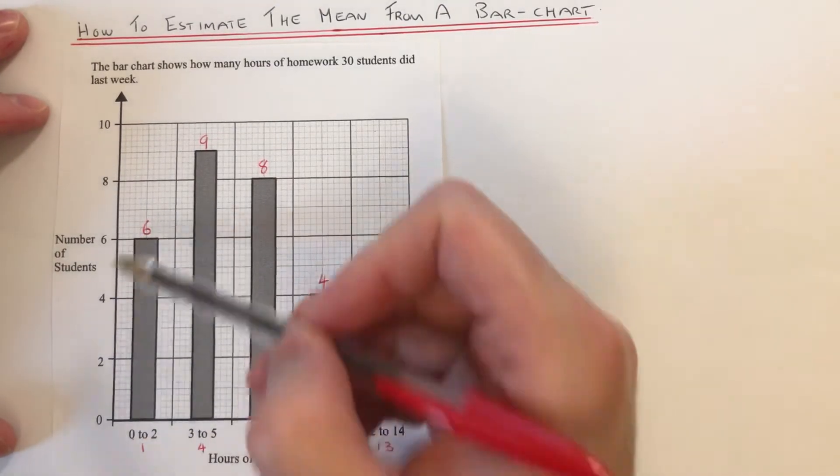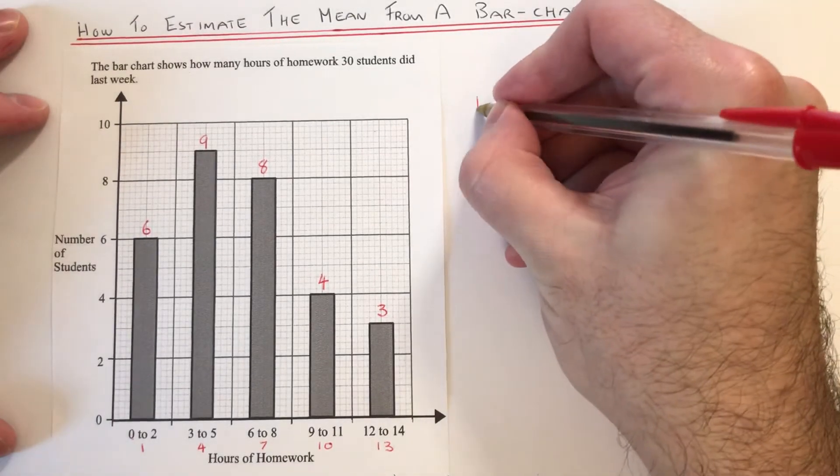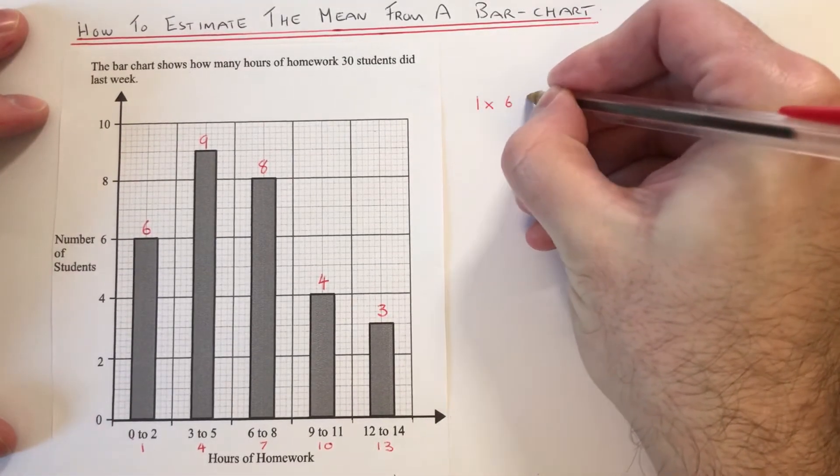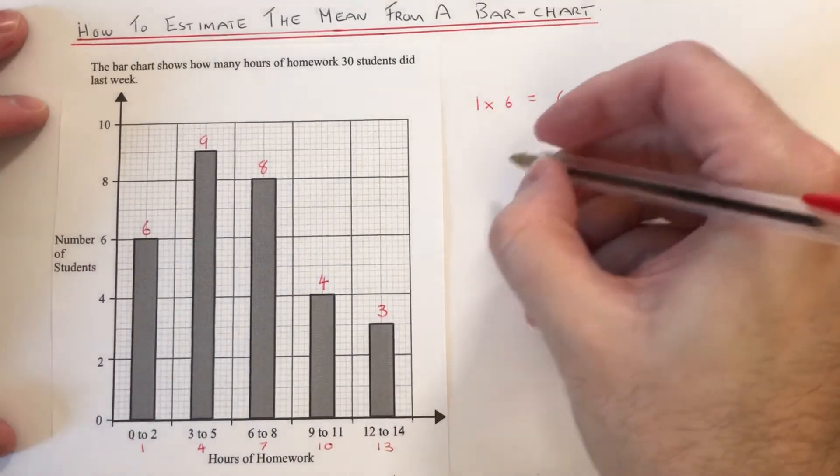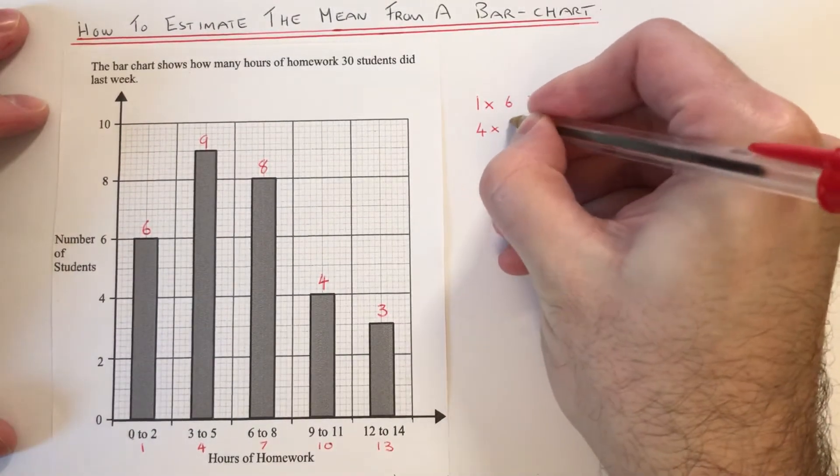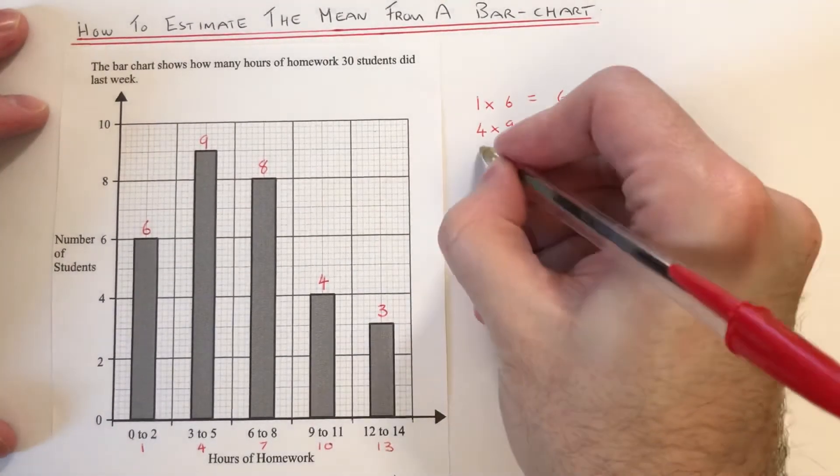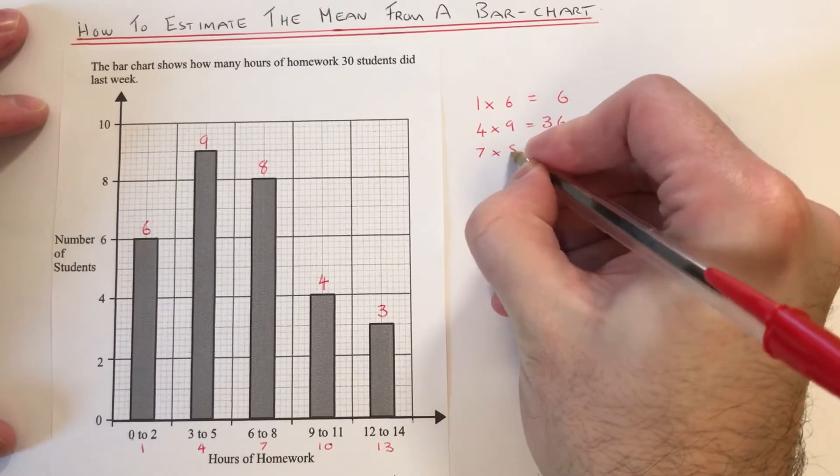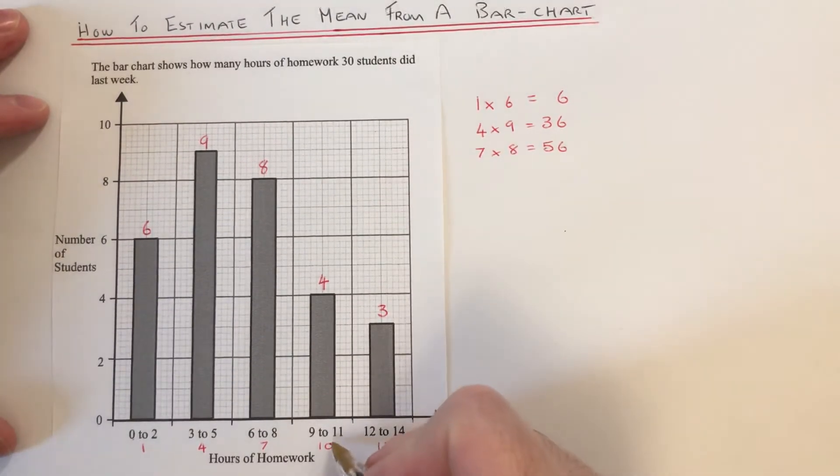So we need to do 1 times 6, which is 6. Next one would be 4 times 9, which is 36. Next one would be 7 times 8, which is 56.